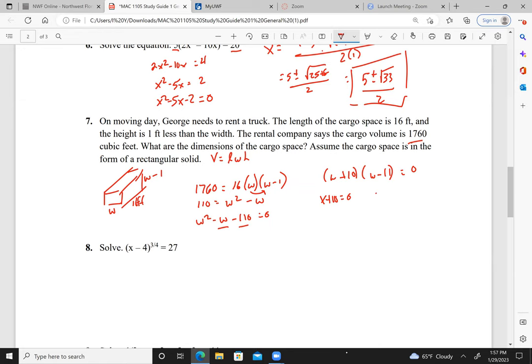So W plus 10 equals 0, or W minus 11 equals 0. W equals 11, or W equals negative 10. Well, we can't have negative 10. So W is 11, which makes W minus 1, 10. So my cargo hold is 16 feet by 11 feet by 10 feet.